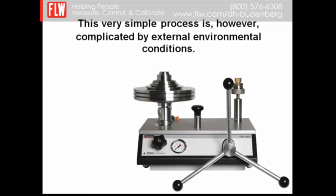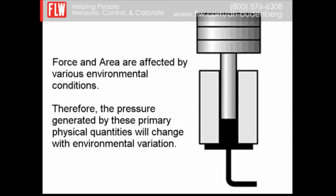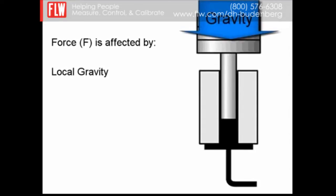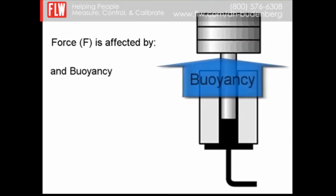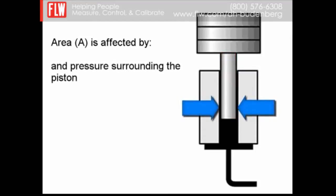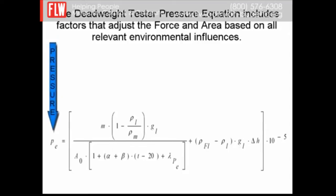These are very simple principles but complicated by environmental conditions. Force and area are affected by various environmental conditions. Force is affected by gravity and buoyancy. The area of the piston is affected by the temperature of the piston and the pressure surrounding the piston. The dead weight tester equation includes factors that adjust for the force and area based on all relevant environmental influences.